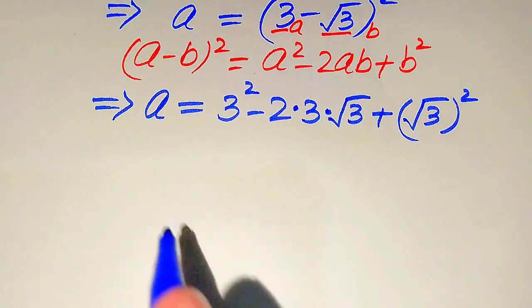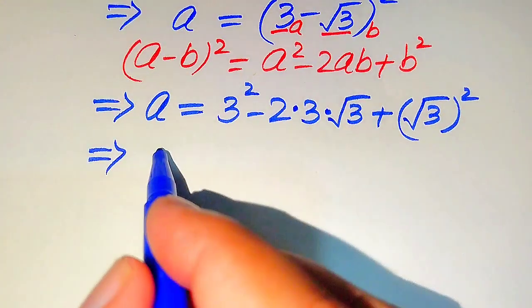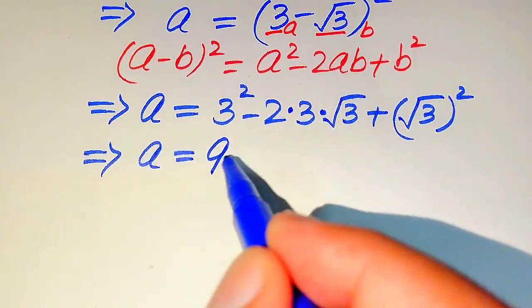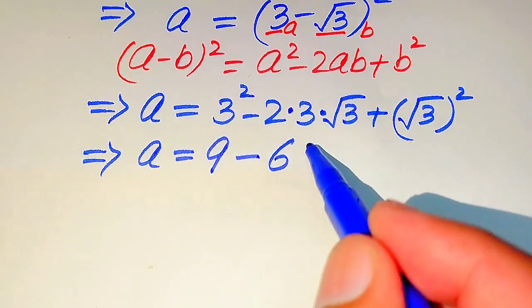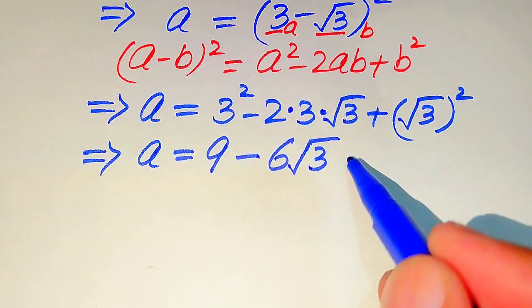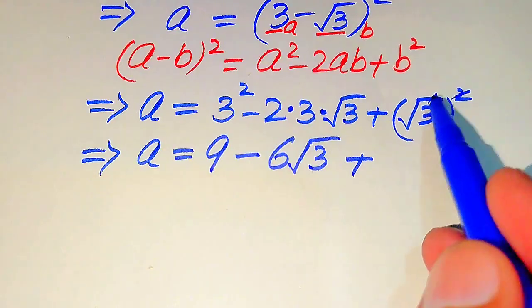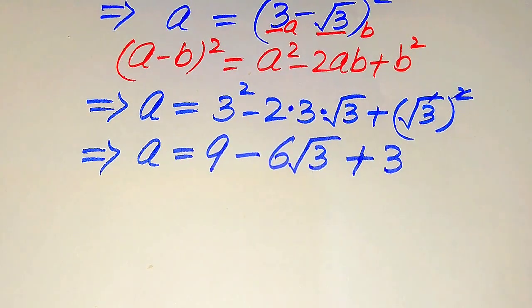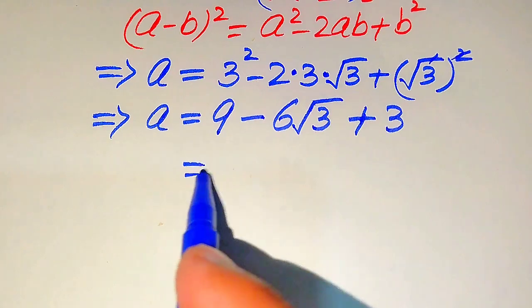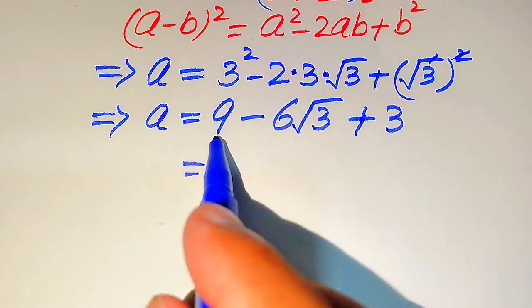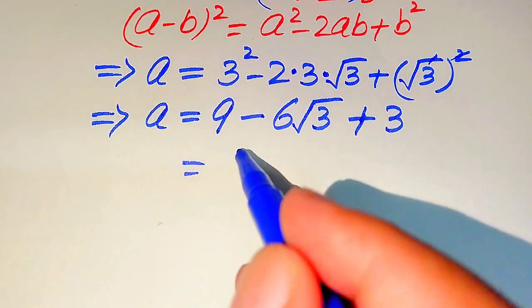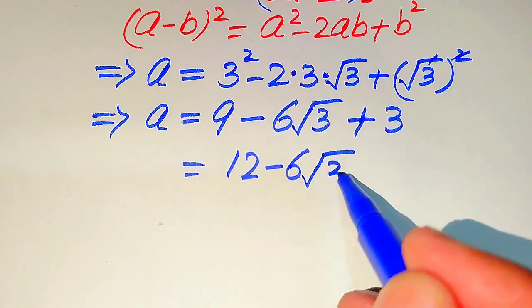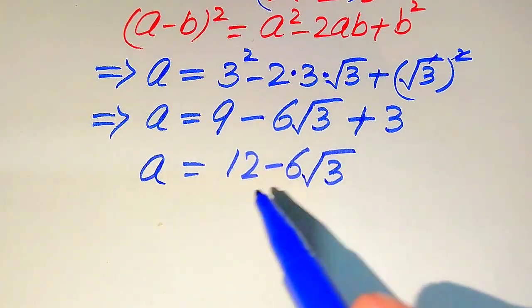In the next step, 3 squared becomes 9, minus 2 times 3 becomes 6 times square root of 3, plus the square and square root cancel giving just 3. When we add these two constant terms, 9 plus 3 becomes 12, so we get: a equals 12 minus 6 times square root of 3.